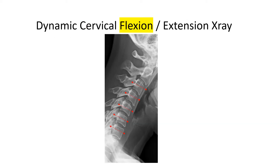In cervical flexion, what we're looking for is the alignment of each vertebra on top of each other. Everything should be nice and neat — but we can see some disruption where the top vertebra has slid a little bit forward on the bottom one. The bottom level looks a little more stable, so we have some instability. Flexion identifies both the facet capsule as well as the ligaments in the back of the neck.